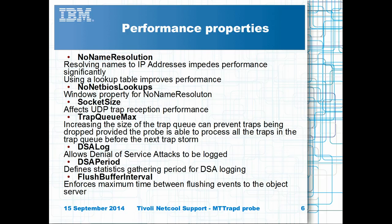DNS lookups and event host file lookups can impede performance when there are high event rates. For UDP traps, the socket size can be increased to improve the probe's performance, whilst increasing the trap queue size allows the probe to manage more events during a period of flooding, provided the probe is capable of draining the event queue before the next flood arrives.